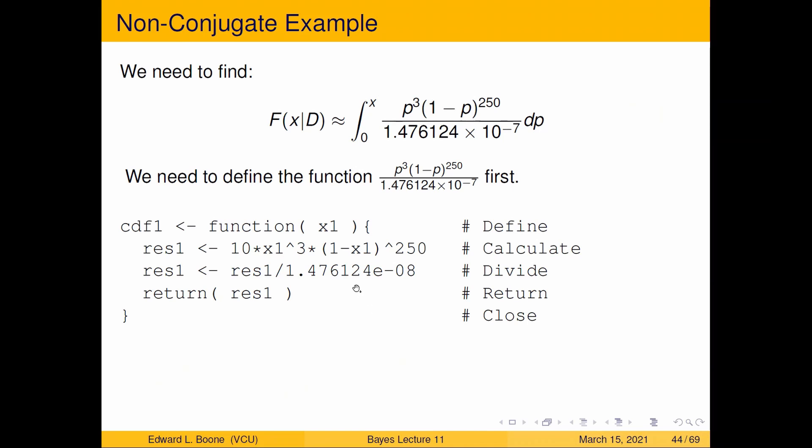What I did is I went back and I called this cdf1 instead of f1. It's exactly the same as my other one, except this time I divided by my constant that I came up with, that I integrated out. I came up with that and I just divided by it and then I return it and bingo. This is the actual pdf. I call it cdf, but it's really a pdf.